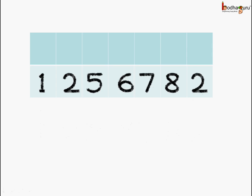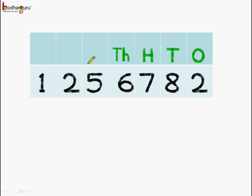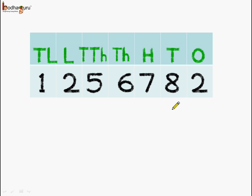So let us put the number and start writing the place values starting from the ones place, which is the rightmost side. This is ones place, then tens, hundreds, then thousands, then 10 thousands, then lakh, and then 10 lakhs. Now it becomes very easy to read the number. There are one ten lakhs, two lakhs, five ten thousands, six thousands, seven hundreds, eight tens, and two ones.